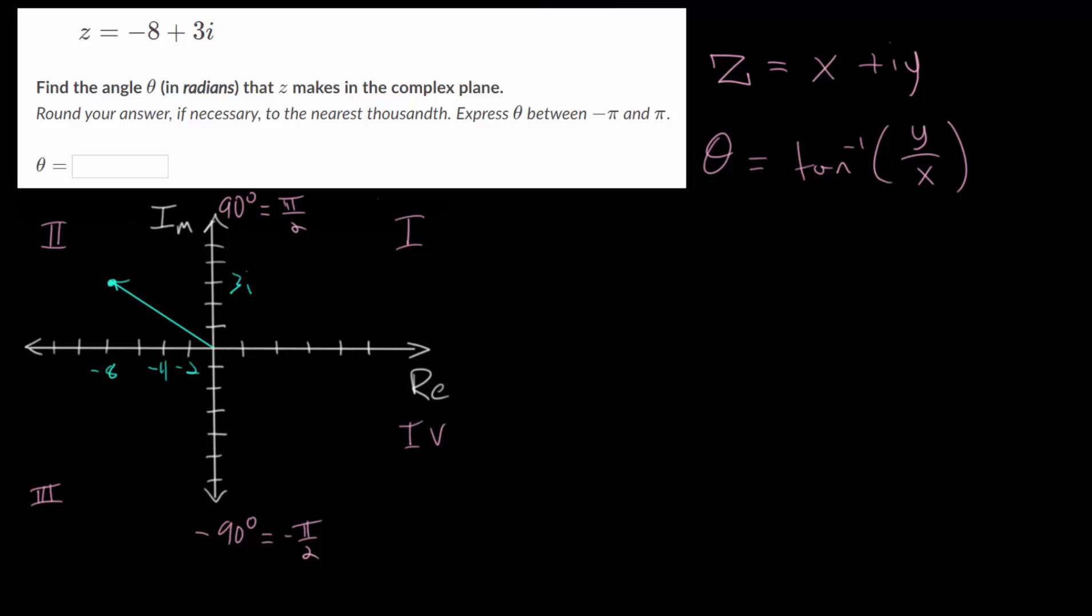If we want, we can draw in the arrowhead. And remember, this vector has a length, a magnitude, also known as the modulus of the complex number. But for this particular problem, we're not concerned with finding that. What we need to find is the angle measured from the positive real axis. And we can call this angle theta, and we will need to measure it in radians.